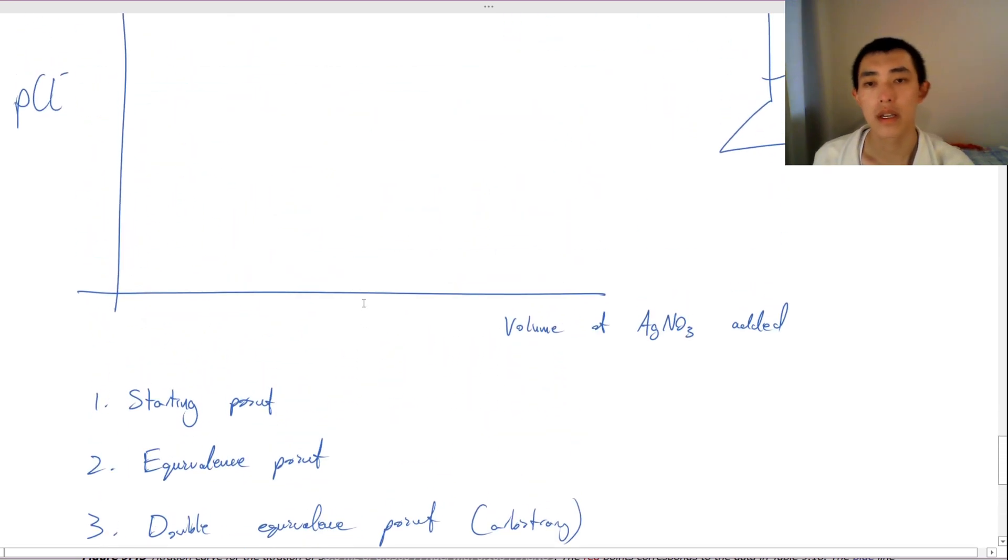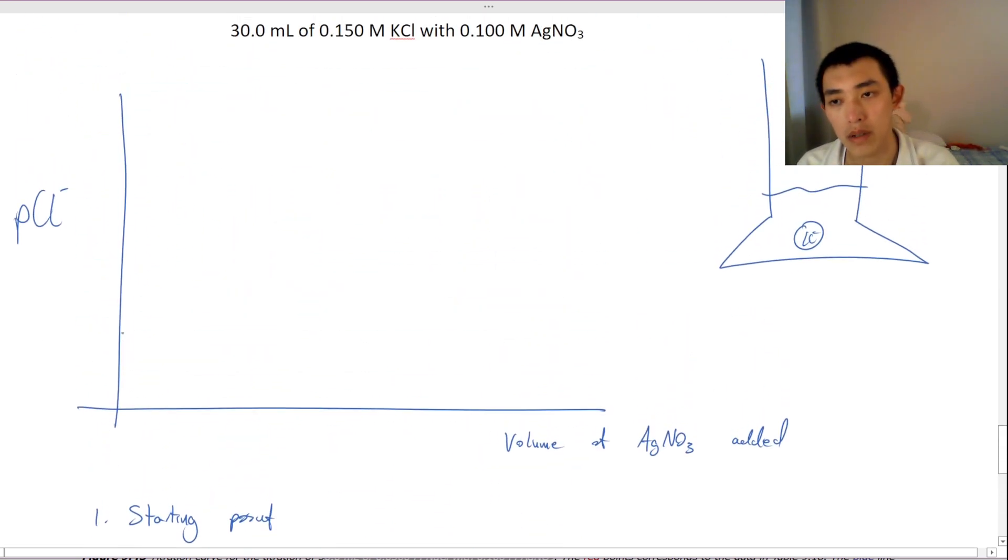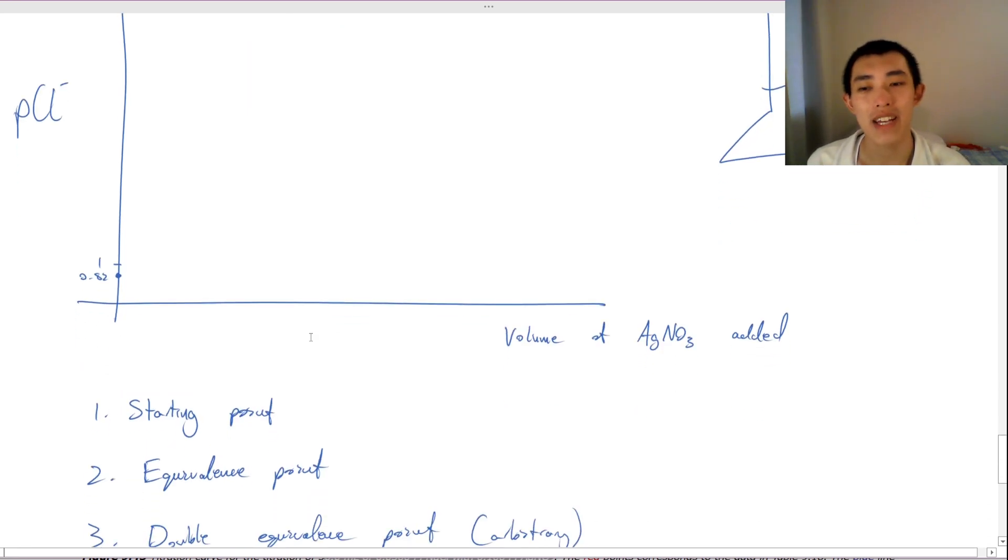So let's plot this on here. That's 1. That's going to be our initial pCl. Nice. Okay.